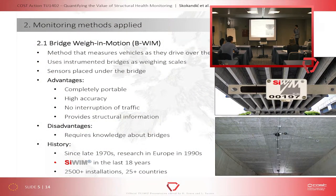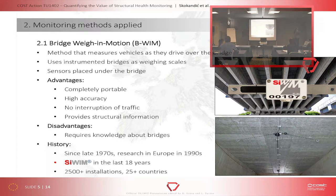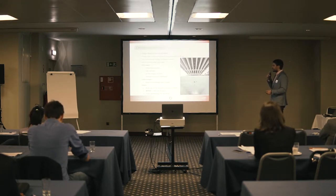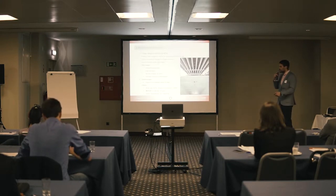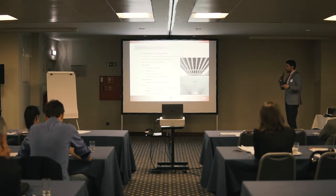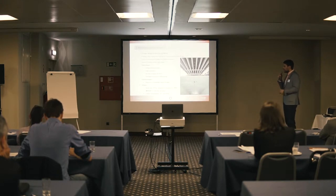Bridge weight-in-motion is a method that measures every vehicle that passes the bridge, using the bridge itself as a weighing scale. It has advantages over stationary systems because those are built into the pavement — you need to close the bridge and dig up the pavement, and they are permanent. This system is fully portable: you can apply it on one bridge, measure, then move it to another. It's placed under the bridge so there's no traffic interruption, which is very important for highway bridges. It also has higher accuracy and provides structural information about the bridge's response to traffic loads.